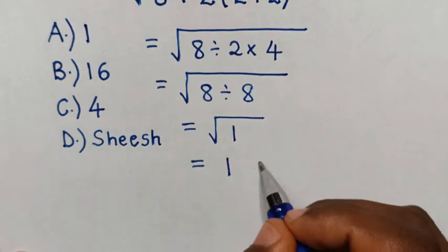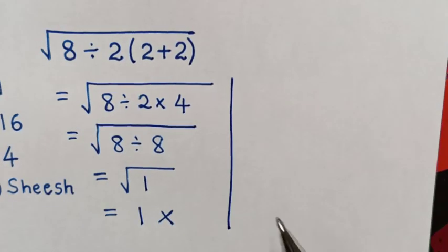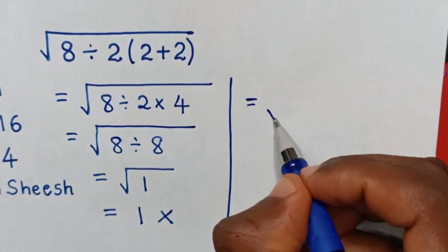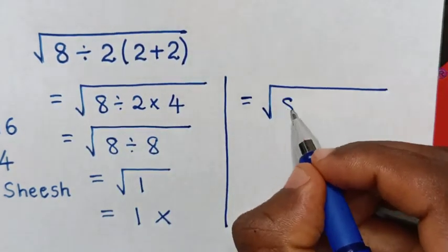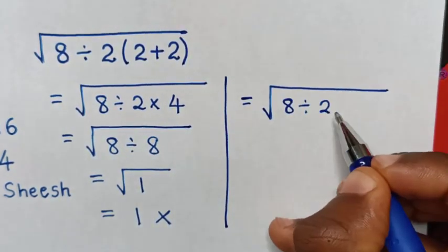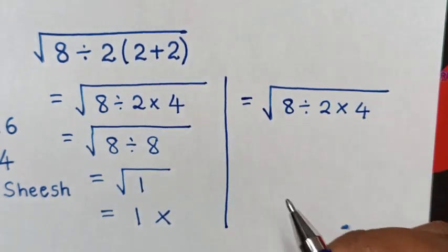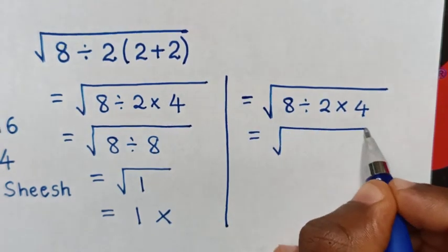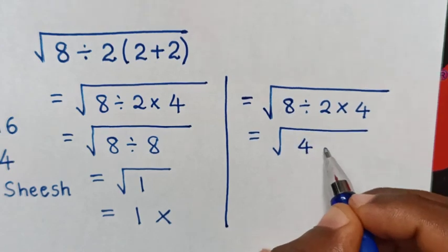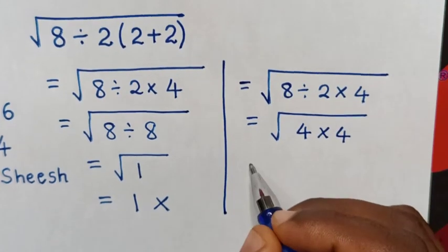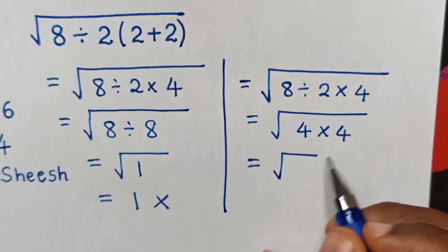This is the wrong way to do this solution. Now, the correct way to do this solution: it will be equal to square root of 8 divided by 2, then 2 plus 2 is 4. So, it will be equal to square root of 8 divided by 2 is 4, then times 4. So, it will be equal to square root of 4 times 4 is 16.